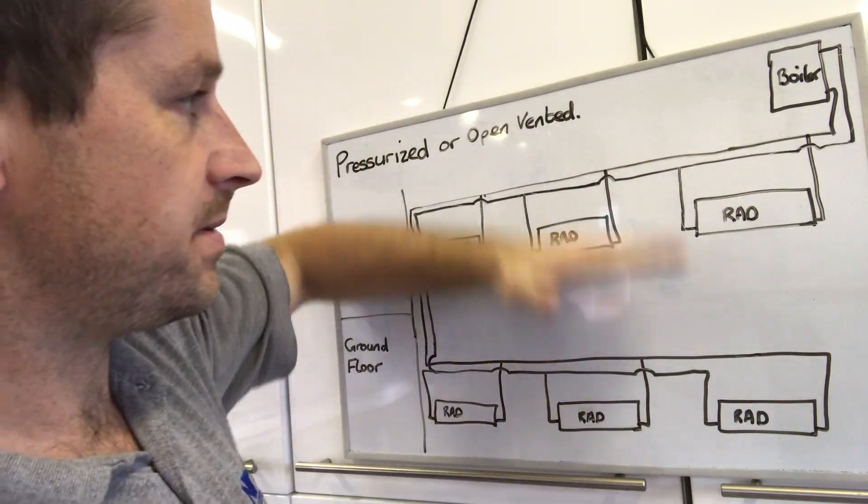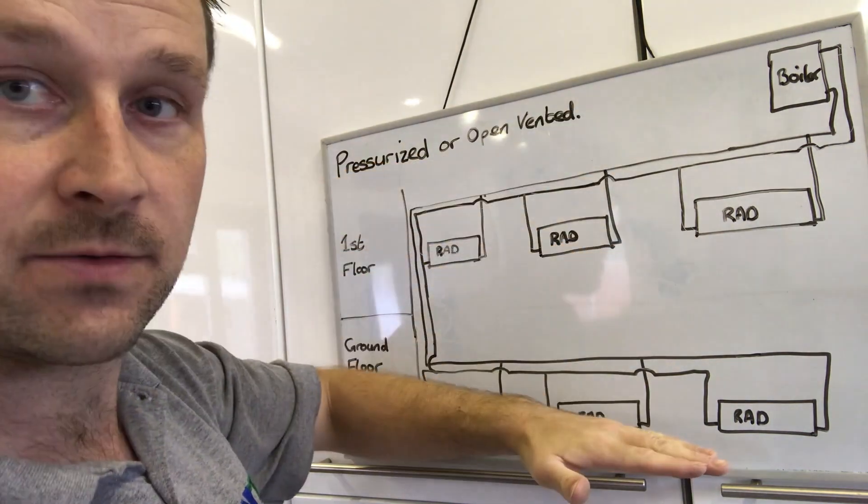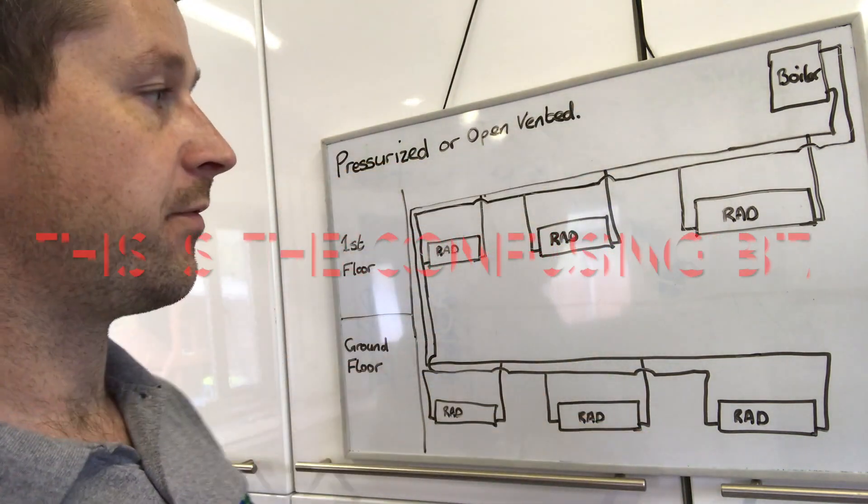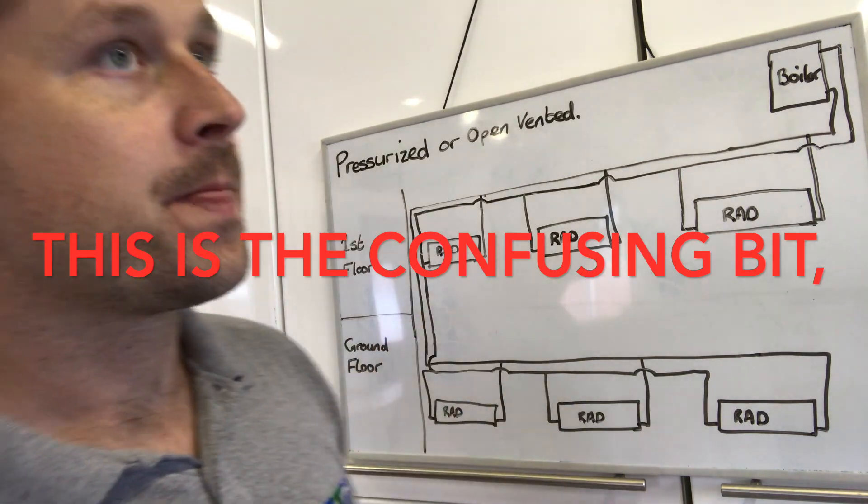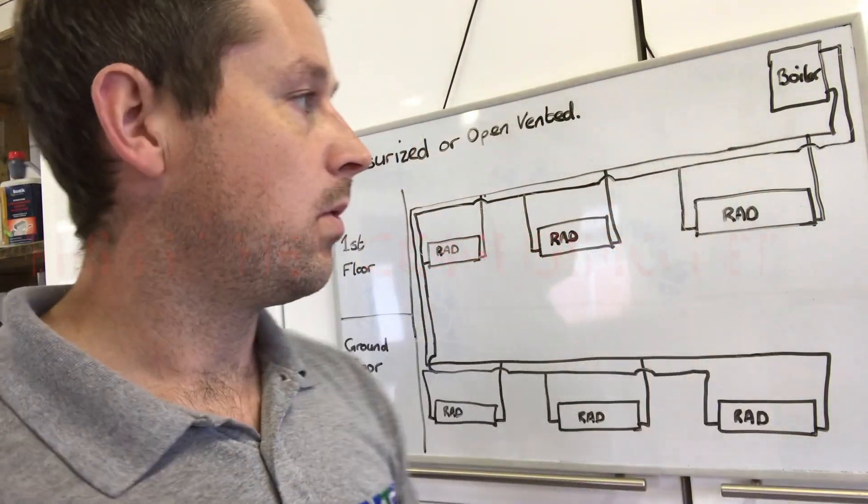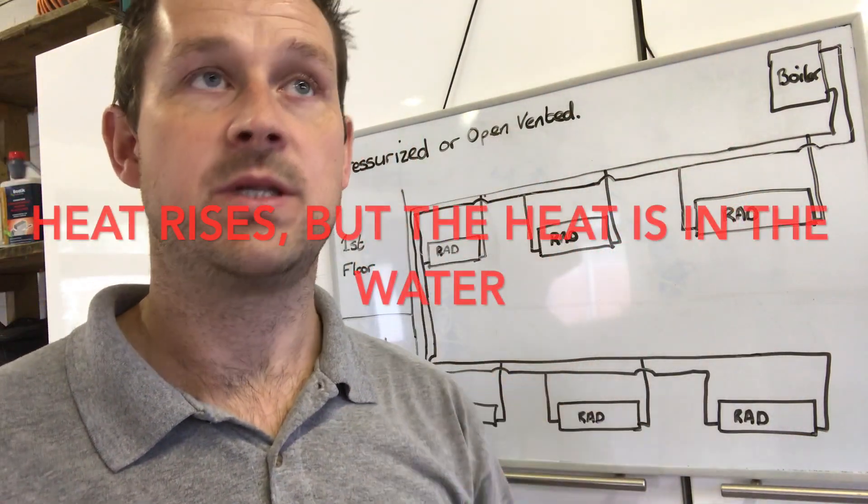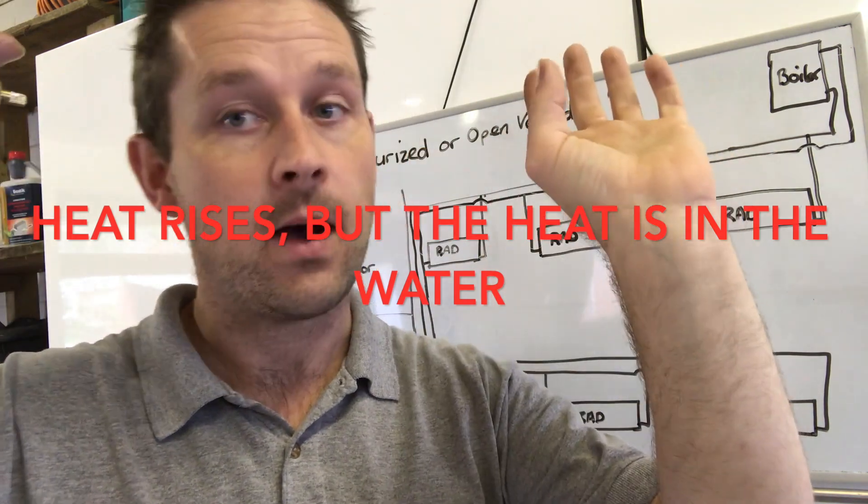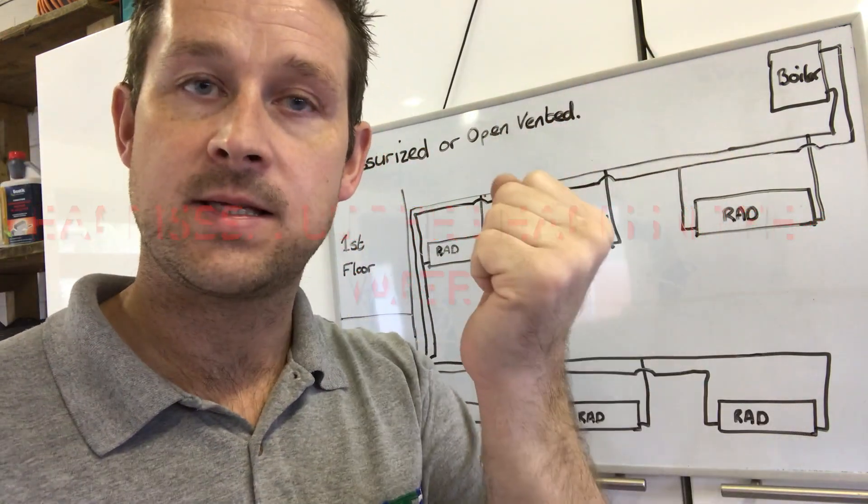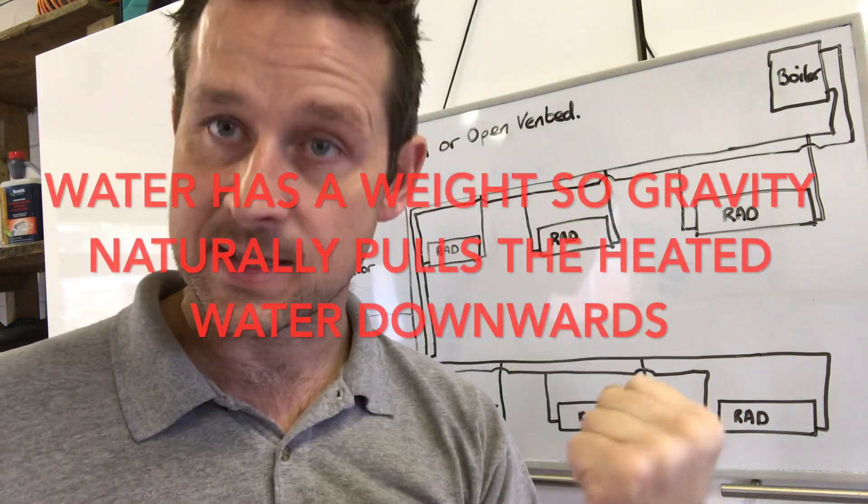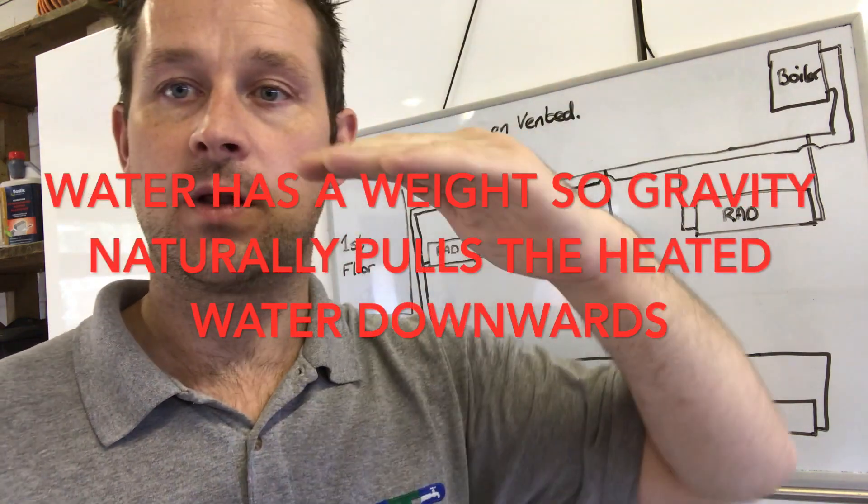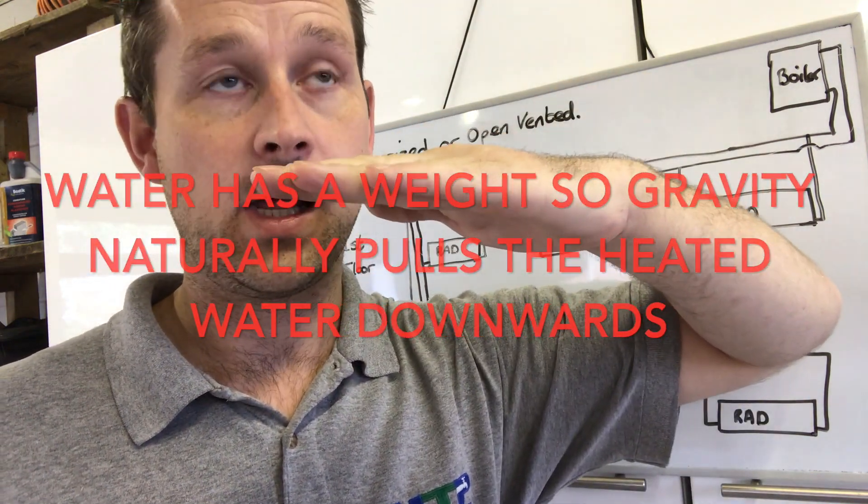What you're going to do is split your house up, so you've got your upstairs radiators and your downstairs radiators, your first floor and ground floor. Now heat rises, so obviously the boiler is heating the water which is sending that heat up. However, the water, gravity pulls that down, so in actual fact, the heat goes down rather than up.